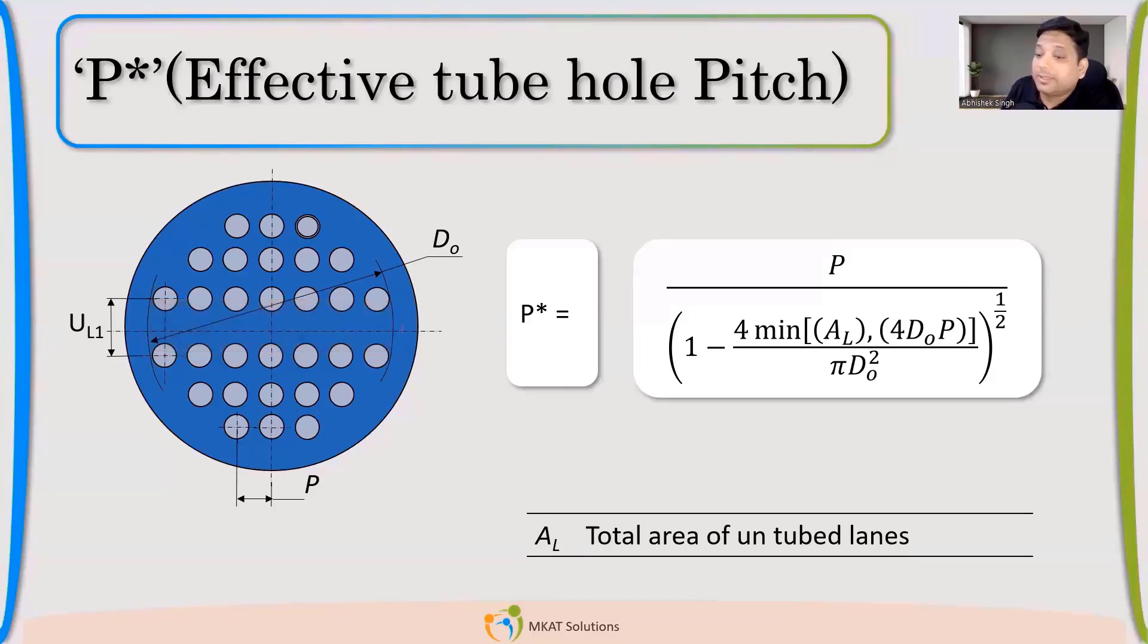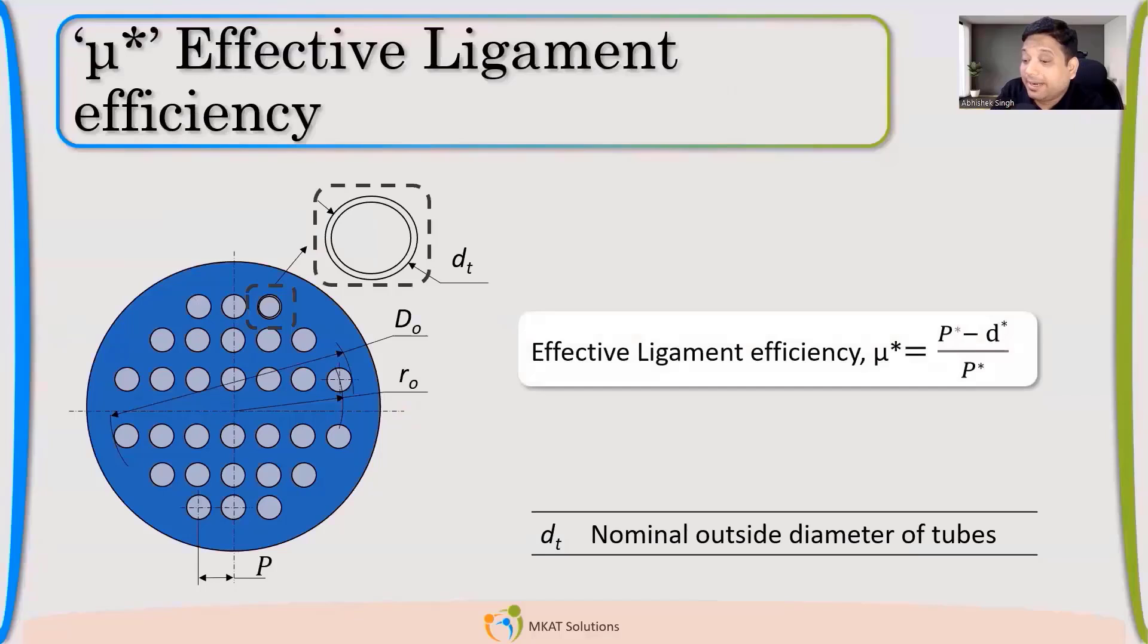Now, once I have P*, then I can calculate ligament efficiency, which is effective ligament efficiency. Normal ligament efficiency is P minus DT divided by P. Here, it is P* effective pitch minus d* effective diameter, divided by effective pitch. So that is my effective ligament efficiency.